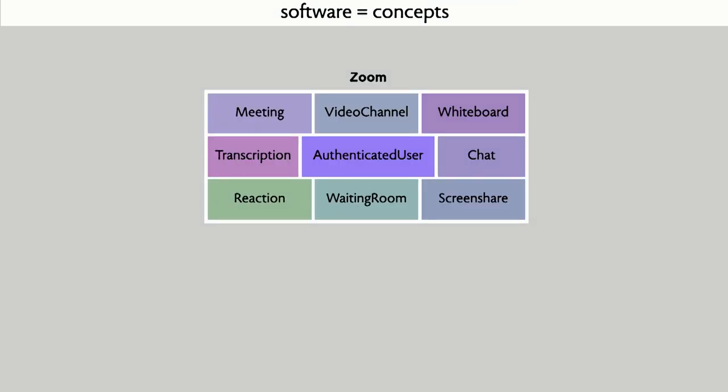The way I think of a software product is basically a composition of multiple concepts, each characterized by its key scenario. Zoom, for example, has the crucial meeting concept, video channels, and many other scenarios too. To use Zoom, you have to understand each of these concepts and its essential scenarios. Some of these are novel — prior to Zoom, people hadn't done the meeting concept with the idea of a link. Some are familiar, like chat. Some are completely basic, like having an authenticated user.